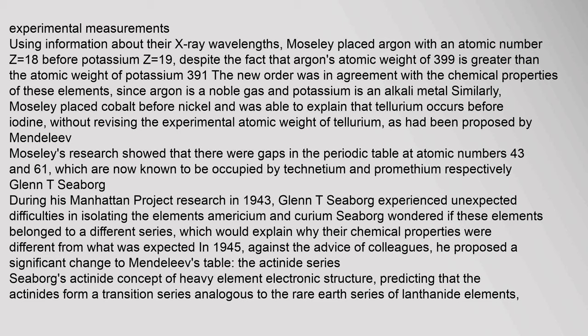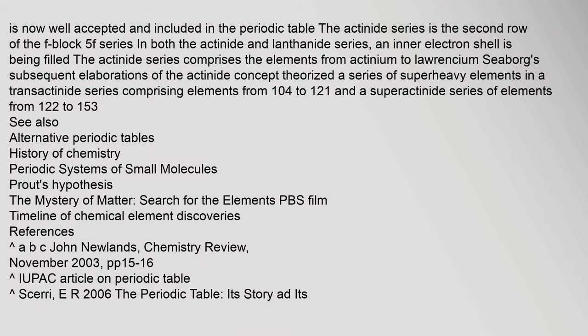Moseley placed cobalt before nickel and was able to explain that tellurium occurs before iodine without revising the experimental atomic weight of tellurium. His research showed that there were gaps in the periodic table at atomic numbers 43 and 61, now known to be occupied by technetium and promethium respectively. During his Manhattan Project research in 1943, Glenn T. Seaborg experienced unexpected difficulties in isolating the elements americium and curium. In 1945, against the advice of colleagues, he proposed a significant change to Mendeleev's table — the actinide series — predicting that the actinides form a transition series analogous to the rare earth lanthanide series.